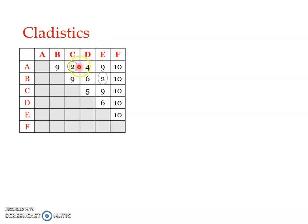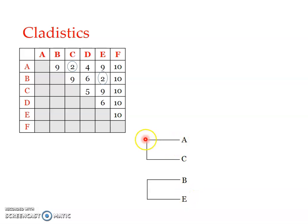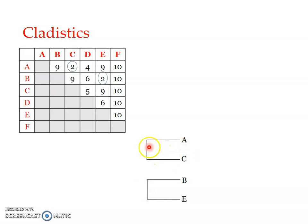There are two combinations showing the least difference: A with C, and B with E. This indicates A is closely related to C, while B is closely related to E. So we start drawing the cladogram with A close to C, and B close to E. The length of lines doesn't matter here, unlike phenetics. This shows A is close with C, and B is close with E, suggesting A and C came from a common ancestor, and B and E came from a common ancestor.